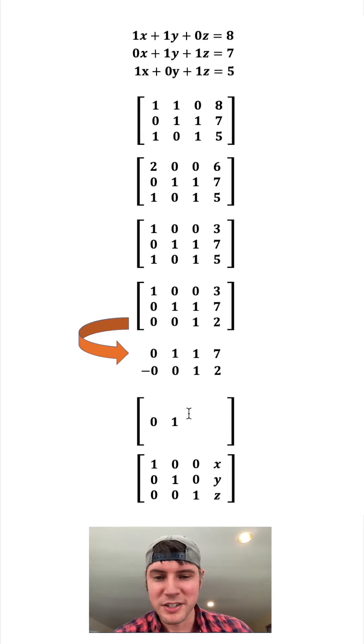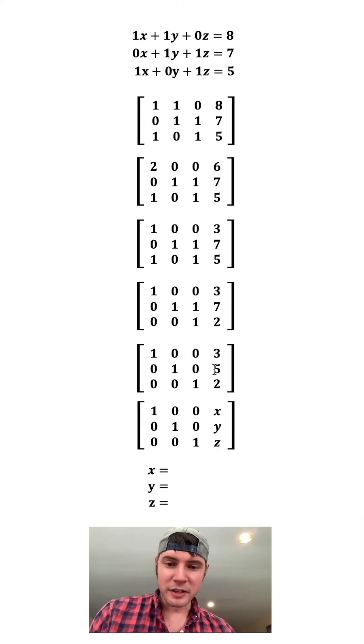So 0 minus 0 is 0. 1 minus 0 is 1. 1 minus 1 is 0. And 7 minus 2 is 5. I'll bring down these other rows. And now we're done.